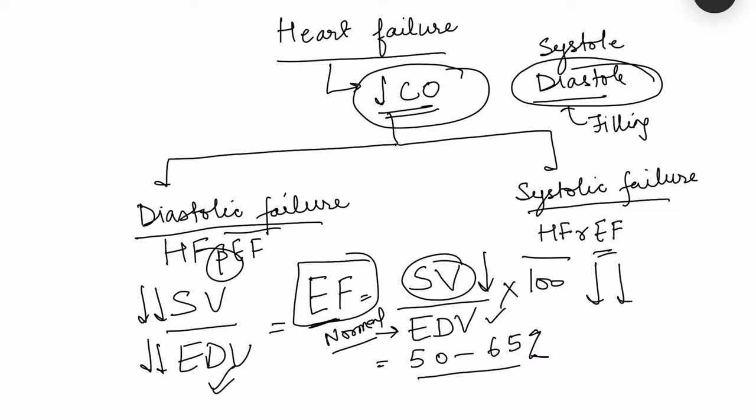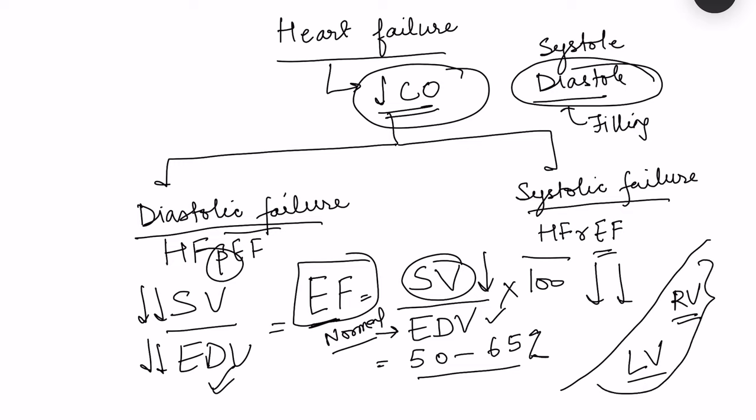Systolic and diastolic failure can occur either on the right side of the heart — right ventricular failure — or on the left side — left ventricular failure. So we can have left ventricle systolic or diastolic failure, and right ventricle systolic or diastolic failure. When both ventricles fail, it is called biventricular heart failure. Now let us look at the causes of systolic and diastolic heart failure.